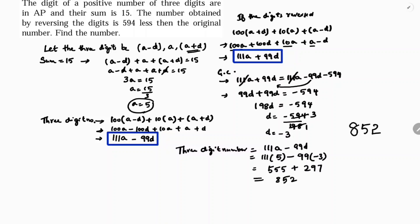To summarize: the digits were taken as a - d, a, a + d in AP. From the sum equal to 15, we got a = 5. We formed the three-digit number as 100 times hundreds digit plus 10 times tens digit plus units digit, giving 111a - 99d. Reversing gave 111a + 99d. Applying the condition that reversed is 594 less than original gave d = -3. Substituting a and d, the answer is 852.